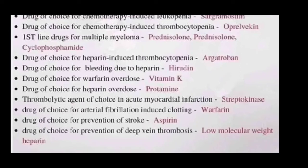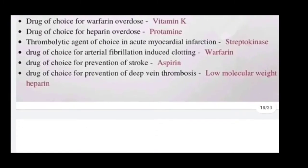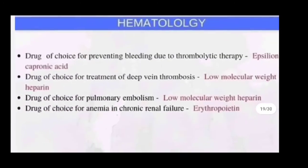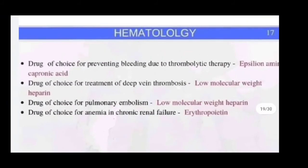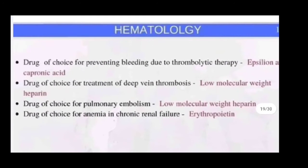Drug of choice for prevention of deep vein thrombosis is low molecular weight heparin. Drug of choice for preventing bleeding due to thrombolytic therapy is epsilon aminocaproic acid. Drug of choice for treatment of deep vein thrombosis is low molecular weight heparin. Drug of choice for pulmonary embolism is low molecular weight heparin.